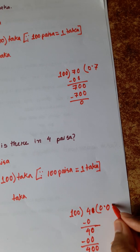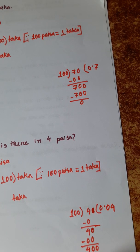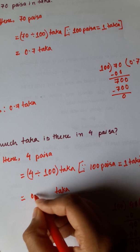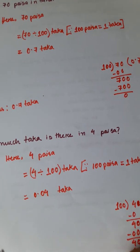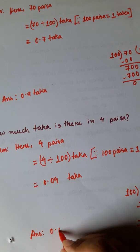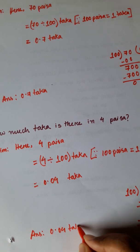100 4s are 400. So 0.04 Taka. So answer is 0.04 Taka.